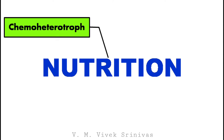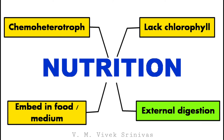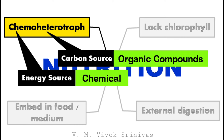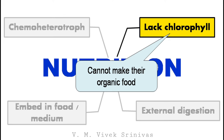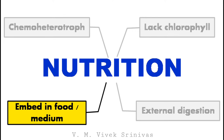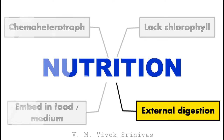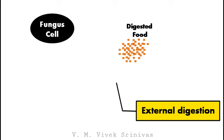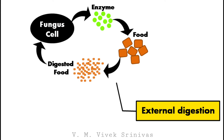Fungi are chemoheterotrophs that lack chlorophyll and are embedded in a food source or medium, undergoing external digestion. They lack chlorophyll so they cannot make their own organic food. They are generally embedded in food sources like wood, vegetation, leather, and bread. Fungal cells secrete extracellular enzymes that digest the outside food material; the digestion is completed outside the organism, and the digested end products are then absorbed by the fungus.